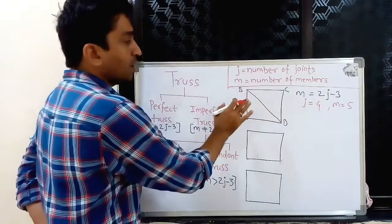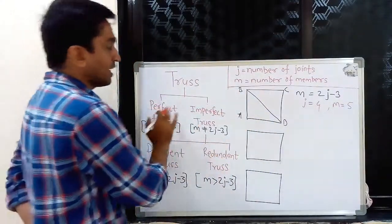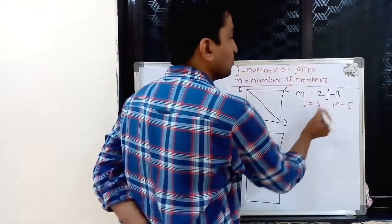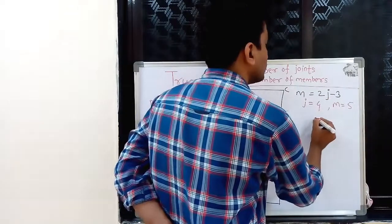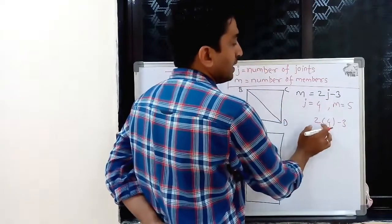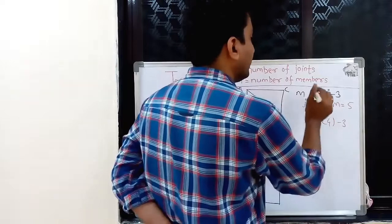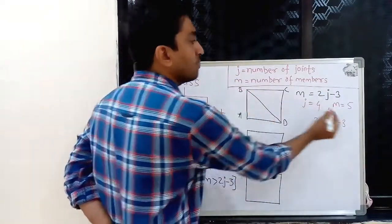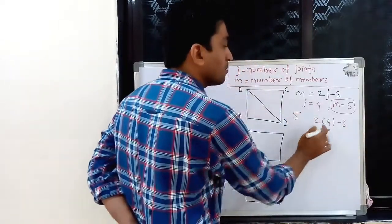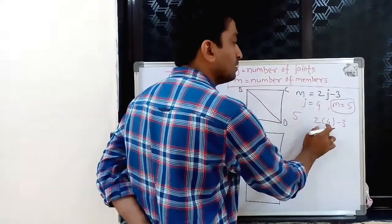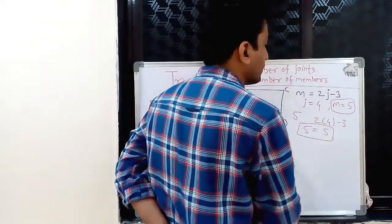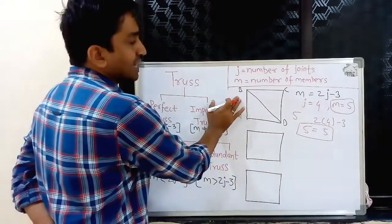Now if we want to call this structure a perfect truss, it should satisfy the mathematical condition M equals 2J minus 3. Putting J equal to 4: 2 times 4 minus 3 equals 8 minus 3, which equals 5. We have provided 5 members and the required number is also 5. So 5 equals 5, RHS and LHS are equal, and we can call this truss a perfect truss.